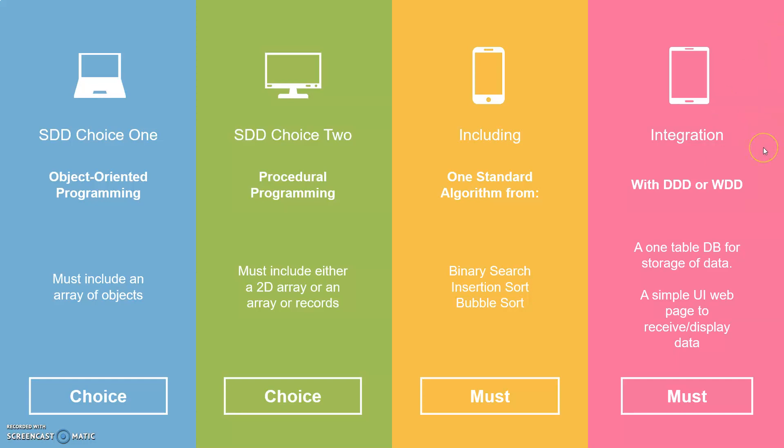The last part is your integration. If you're choosing to do a software development project, it has to integrate with either a database — for storing data, high score tables, or information — or it has to integrate with a website, a simple web page which could be used to input or display information. When this is done, remember it's not the same as working with Microsoft Access — we're going to be using PHP MyAdmin, servers, MySQL, all that type of stuff. A lot of people in the past have picked a software development project with a simple high scores table, which they can then sort, and that covers all the bases for pretty much any program.